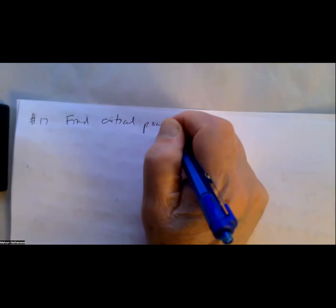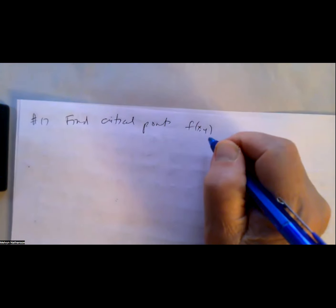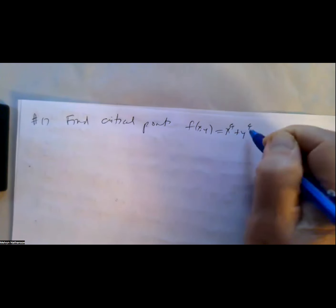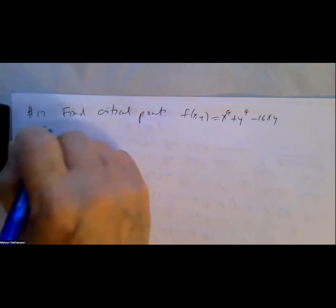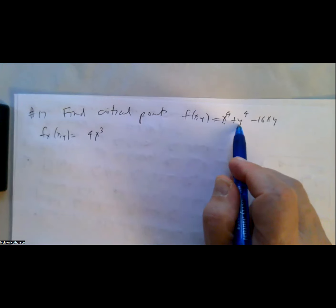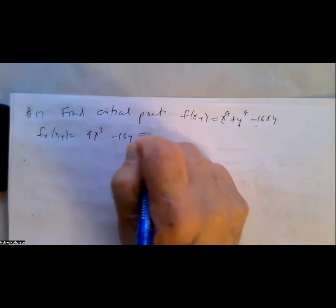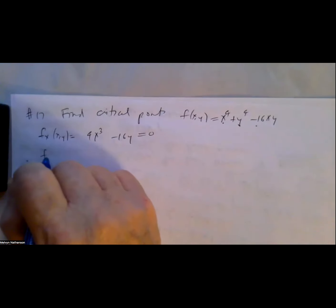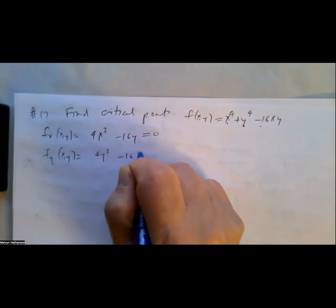Find the critical points of the function f(x,y) = x⁴ + y⁴ - 16xy. Taking the partial derivative with respect to x: the derivative of x⁴ is 4x³, the derivative of y⁴ with respect to x is zero, and the derivative of -16xy with respect to x is -16y, set equal to zero. The partial derivative with respect to y is 4y³ - 16x = 0.